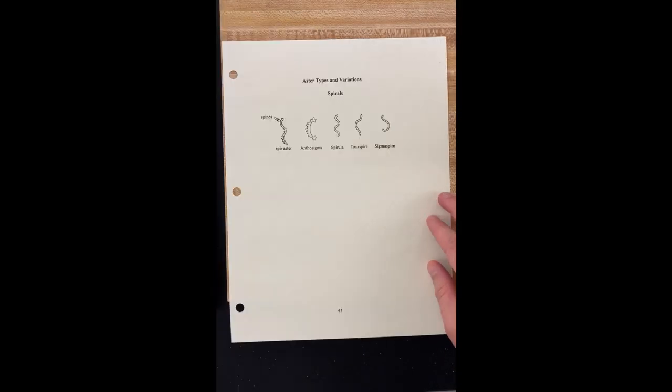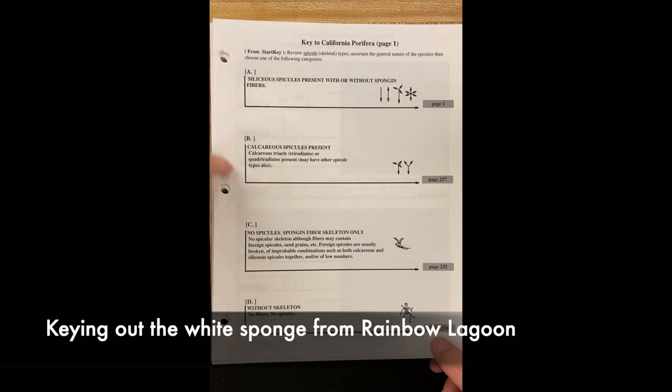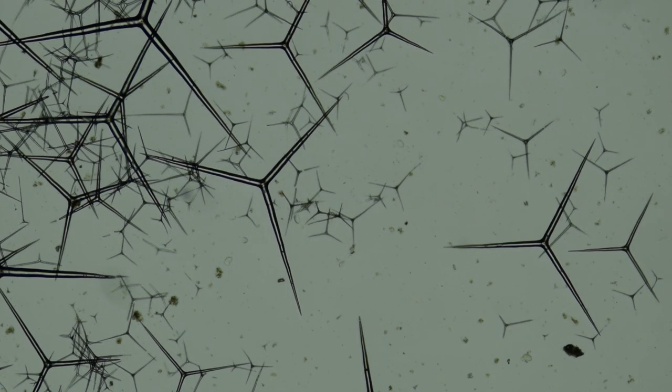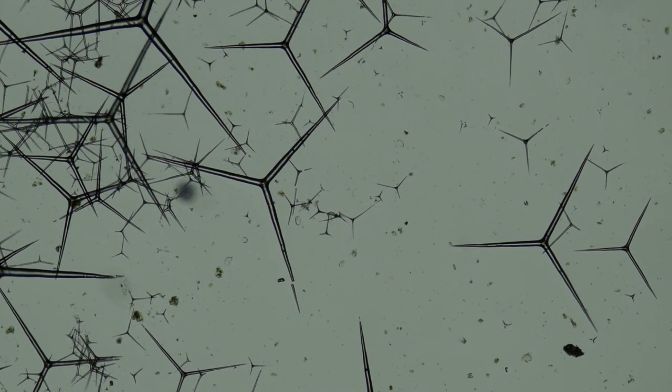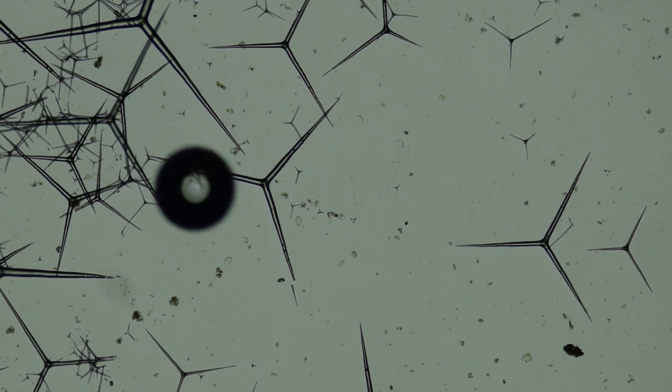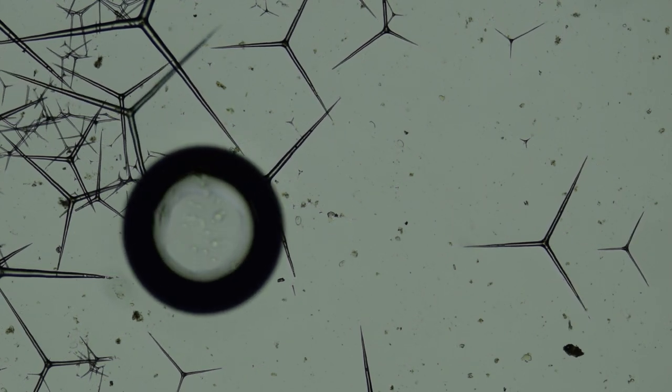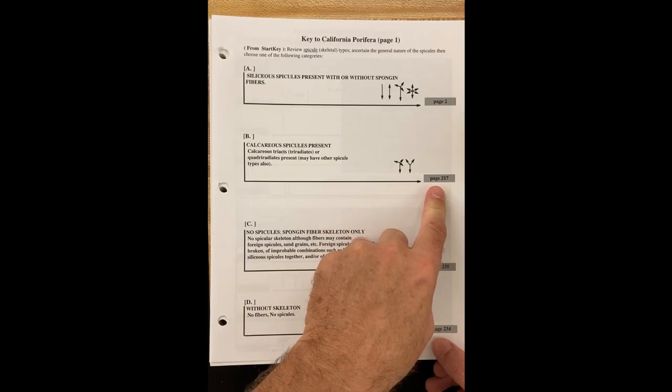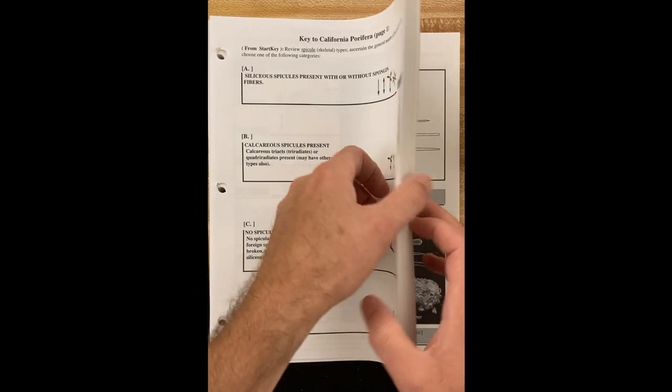We'll try to identify the white sponge from Rainbow Lagoon. So here's the first step in the key. Decide between A, siliceous spicules or B, calcareous spicules. So you remember how these behaved in acid. The spicules dissolve in acid so they're clearly calcareous. So we choose B and go page 217 next.